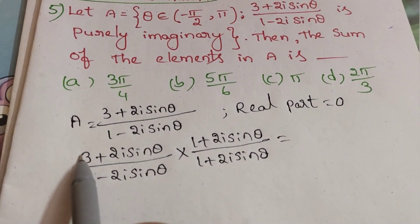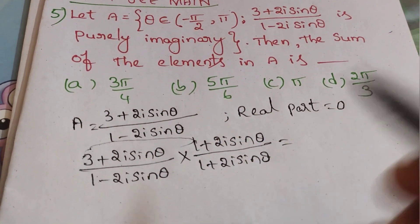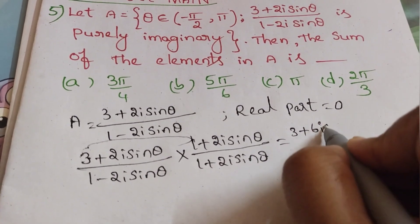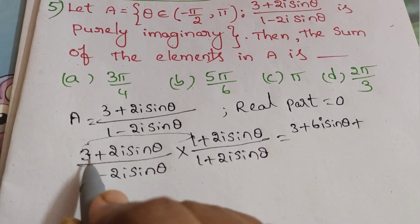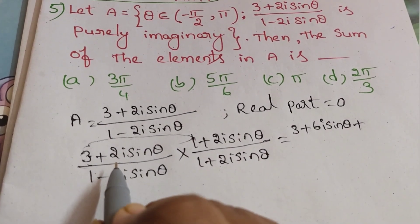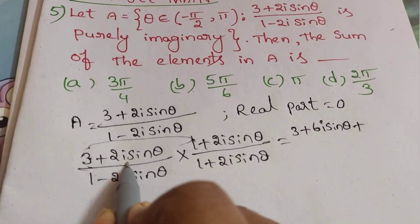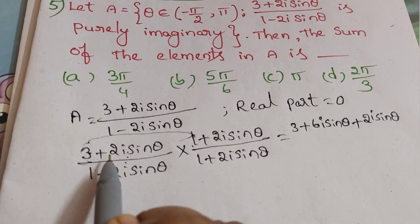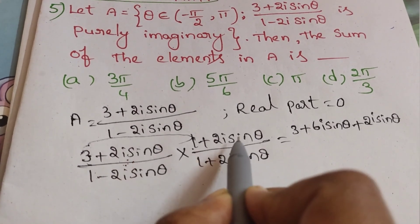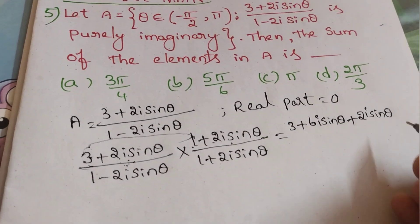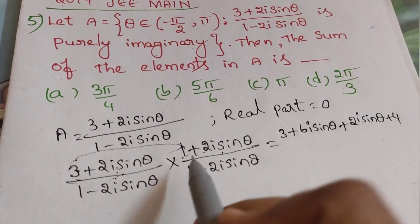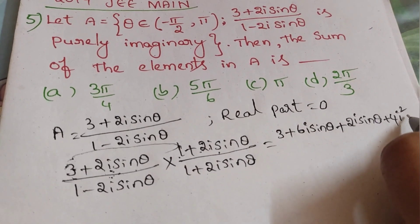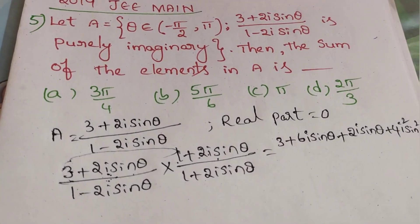Multiply the numerator: 3 times 1 is 3, plus 3 times 2i sin theta is 6i sin theta, then plus 2i sin theta times 1 is 2i sin theta, plus 2i sin theta times 2i sin theta gives 4 i-squared sin-squared theta.